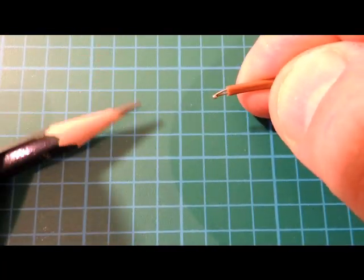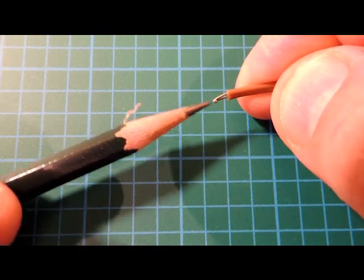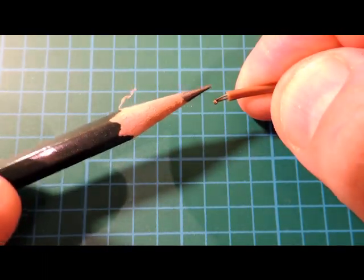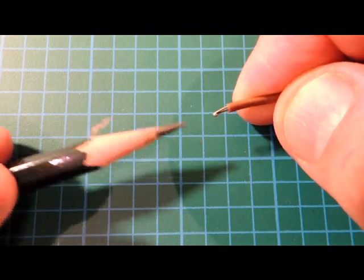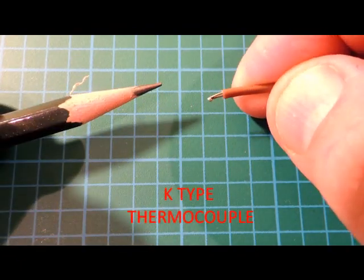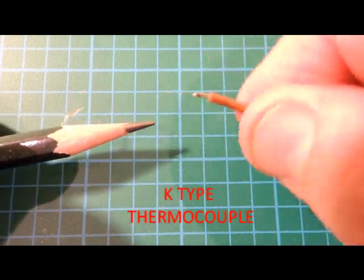The end of the thermocouple here is where the temperature sensing is done. This is known as a Type K thermocouple. If you're not familiar with it, there's an excellent article on Wikipedia.